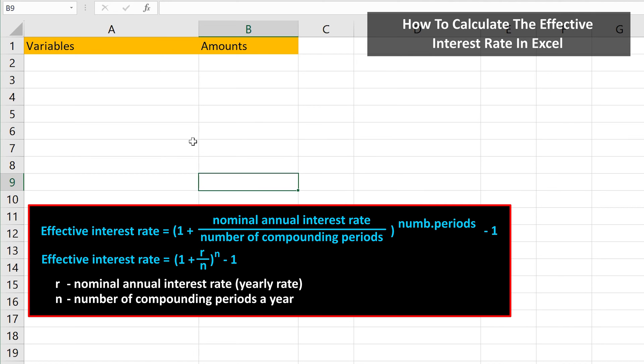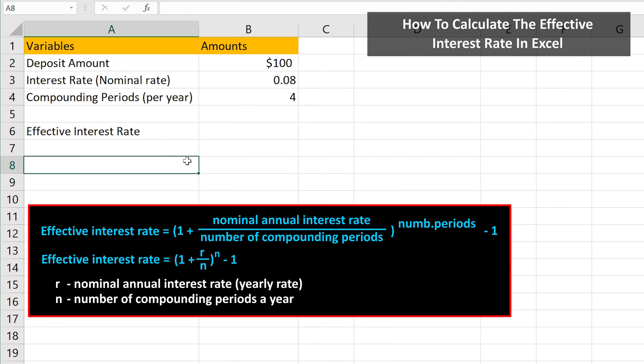Here is the formula to calculate the effective interest rate or to convert the nominal interest rate to the effective interest rate. As an example, let's say that someone invests $100 in an account that pays an interest rate of 8% per year compounded quarterly, so four times per year.